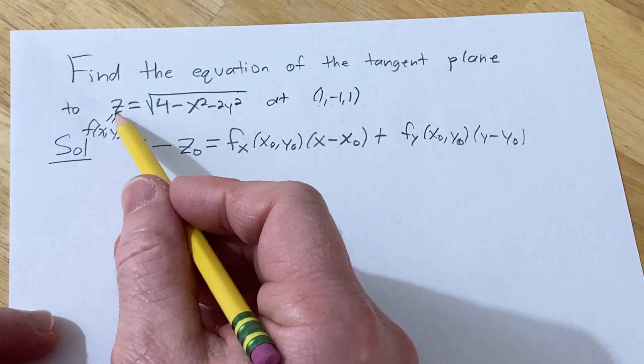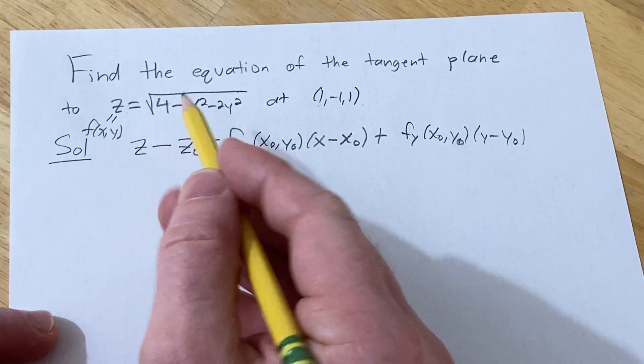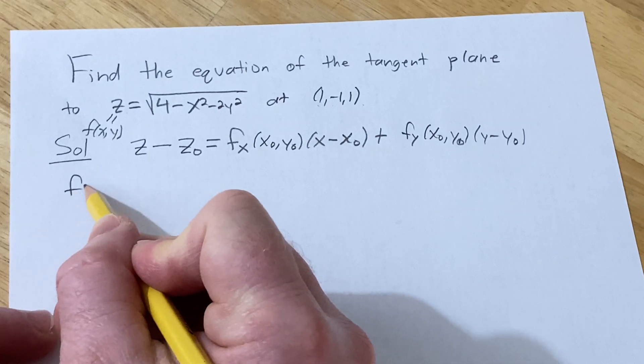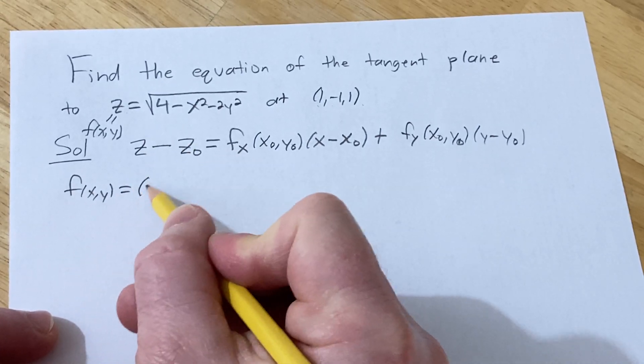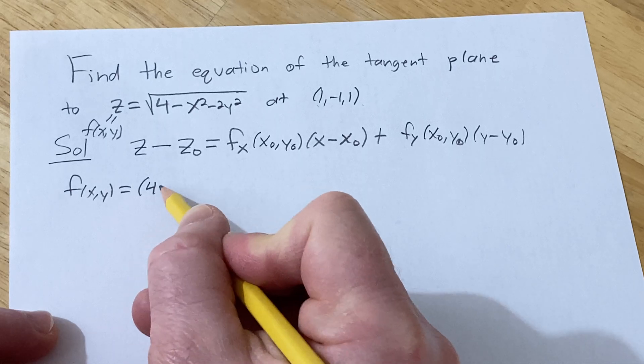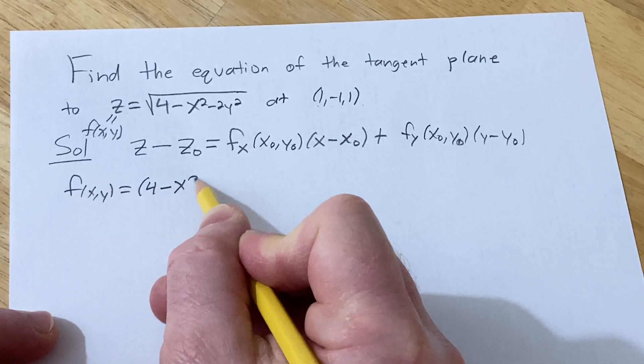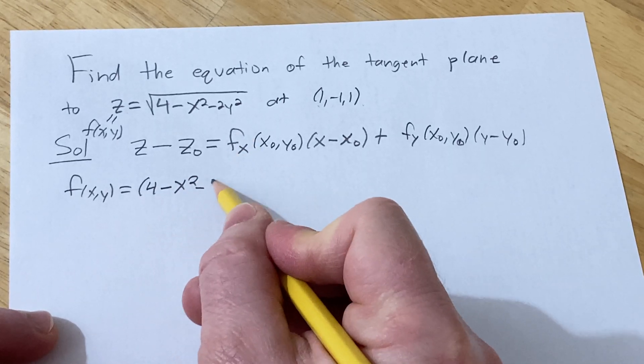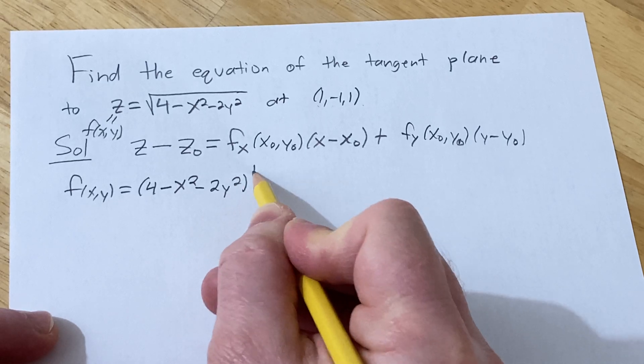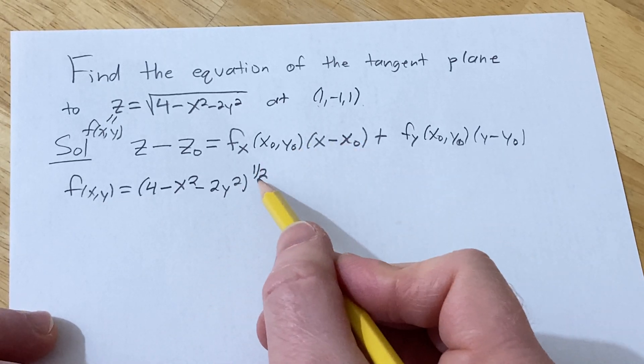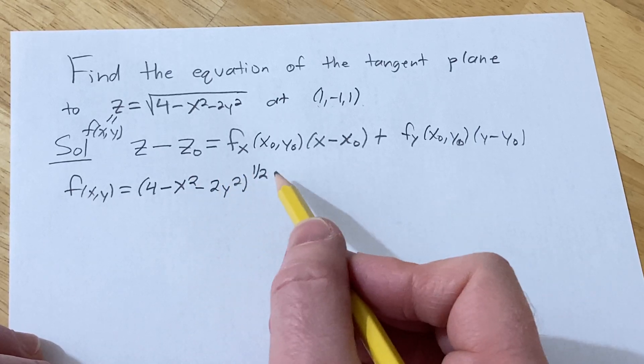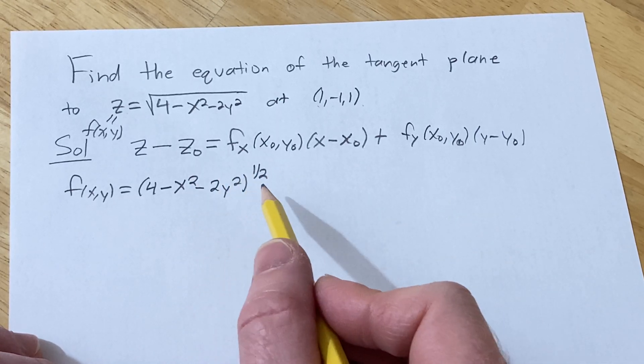We'll start by rewriting our function f in a nicer way. So you want to think of f(x,y) as (4 - x² - 2y²)^(1/2). I'm doing this so that we can actually take the derivative, which makes it easier because now we can apply the power rule.